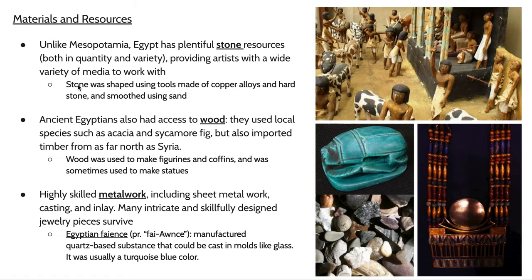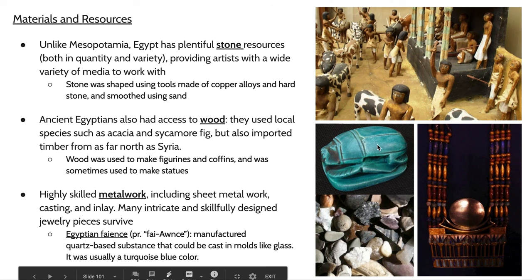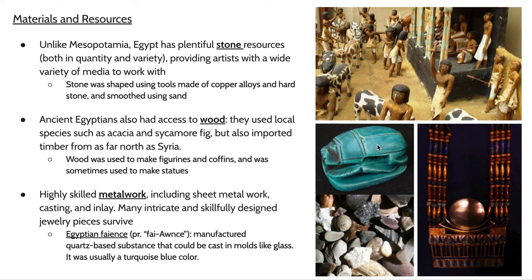In terms of materials and resources, ancient Egypt is pretty different from ancient Mesopotamia. The ancient Egyptians had lots of different kinds of stone available, which allowed them to create those gigantic pyramids. They also had some access to wood — still importing some from places like Syria, but many local species were perfect for building coffins and statues. Stone was primarily shaped using tools and then sanded down with literal sand. The ancient Egyptians were also well known for their metalwork and jewelry, often using gold and silver alloys. There's also a material called faience — a turquoise-blue substance made from quartz that could be cast in molds like glass, available in several colors.